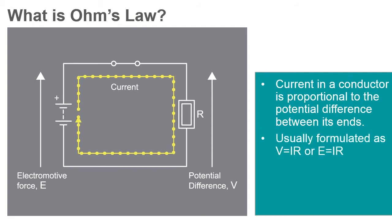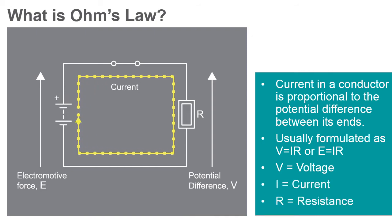It is usually formulated as V equals I times R, where V is the potential difference or voltage, I is the current, and R is the resistance of the conductor.